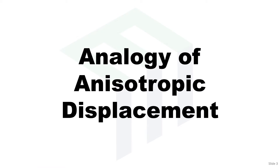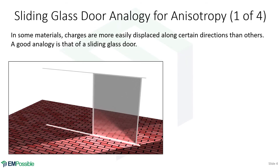Let's start with an analogy of anisotropic displacement. At the atomic scale, we're pushing charges around, and somehow charges are more easily displaced in some directions than others. That seems kind of weird and magical, and I love this analogy. Let's say we have a sliding glass door, making an analogy here to charges at the atomic scale. This sliding glass door is clearly more free to move in some directions than others.